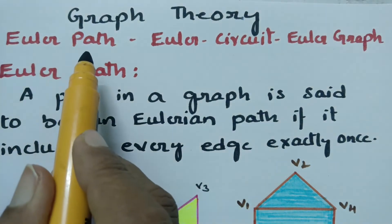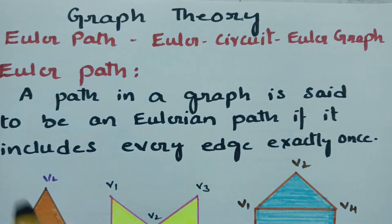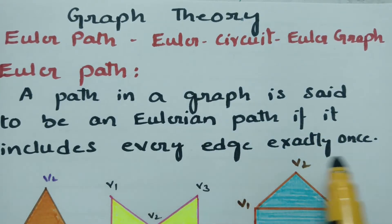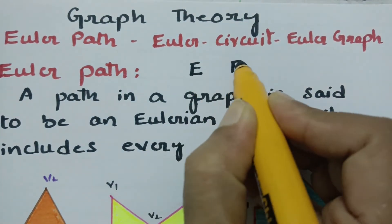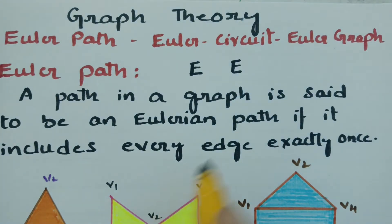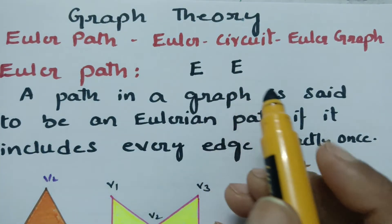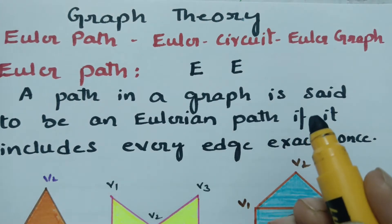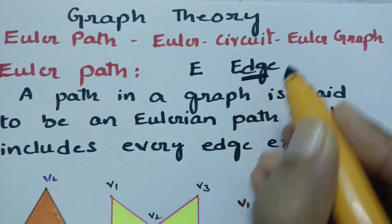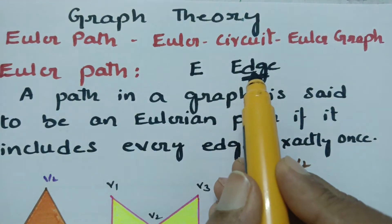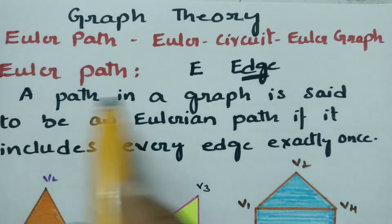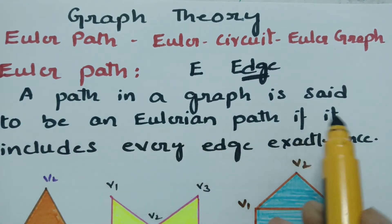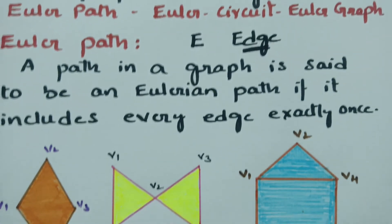First of all, what is Euler path? A path in a graph is said to be an Eulerian path if it includes every edge exactly once. So E for Euler, edge also begins with E. Each and every edge should be covered only once and there shouldn't be any repetition. Only edges you have to check — each and every edge covered once, then we say the graph has an Eulerian path.